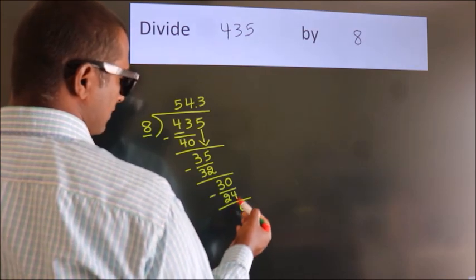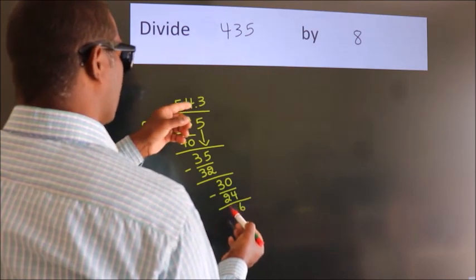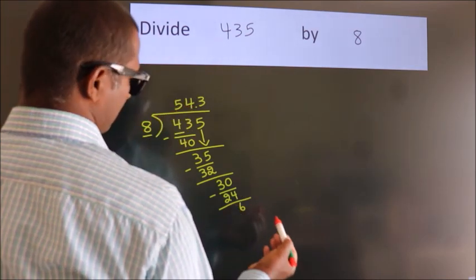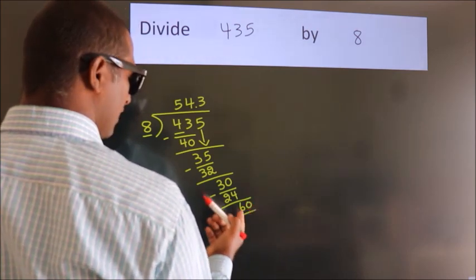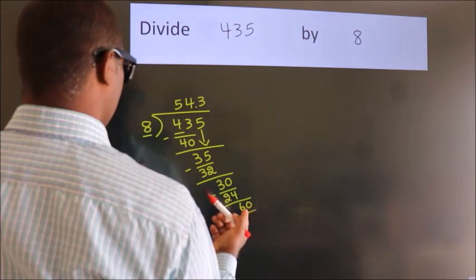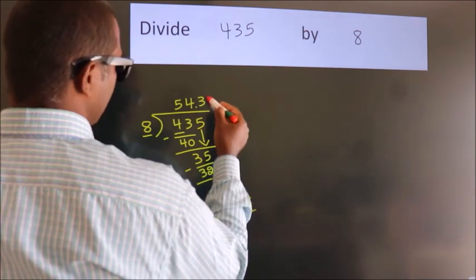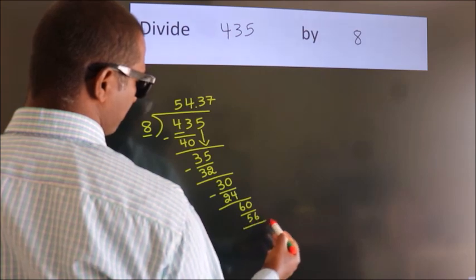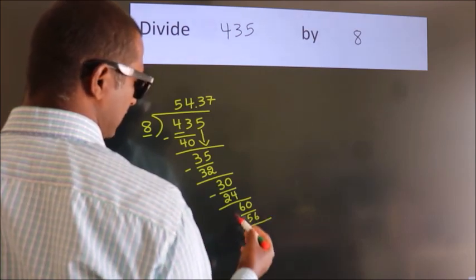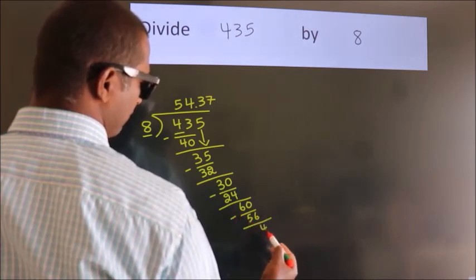After this, we already have the decimal. So directly take 0. So 60. A number close to 60 in 8 table is 8 sevenths 56. Now we subtract, we get 4.